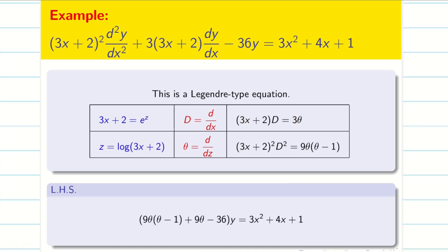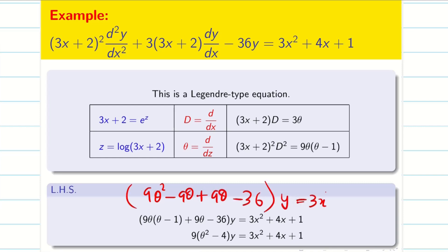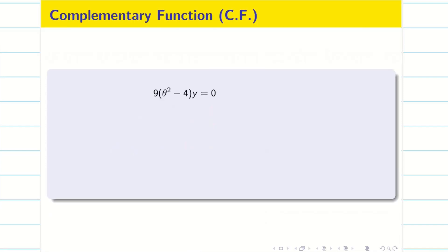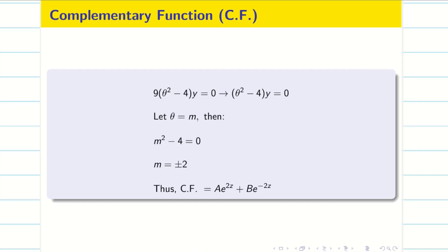Now we deal only with the LHS; we are not bothered about RHS yet. Substituting the LHS values and simplifying, we get 9θ² − 9θ + 9θ − 36 into y, where the −9θ and +9θ cancel. Taking 9 outside, we get θ² − 4 into y = 3x² + 4x + 1. Just find the CF: the roots are m = ±2, so CF = ae^(2z) + be^(−2z).